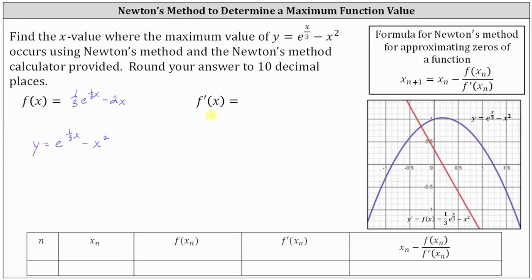Then f prime of x in Newton's method will be the derivative of f of x, or the derivative of y prime. The derivative of 1/3 e to the power of 1/3 x minus 2x is 1/3 e to the power of 1/3 x times 1/3 minus 2, or 1/9 e to the power of 1/3 x minus 2.